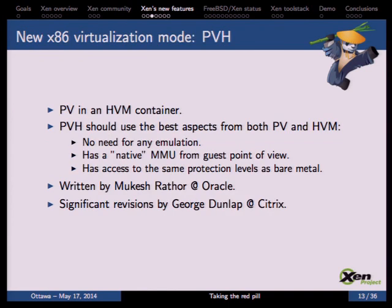In the 4.4 release we added a new virtualization mode called PVH. It is very similar to PVHVM — mainly a PV guest inside an HVM container. We believe this mode will bring the best performance because it takes the best parts from both HVM and PV guests. You don't need any emulated devices, the guest has a hardware-virtualized MMU so no PV interface is needed for page tables, and the guest has access to the same protection levels as on bare metal. It was originally written by Mukesh Rathor at Oracle, with significant revisions by George Dunlap to upstream it into the Xen source tree.